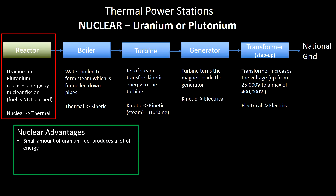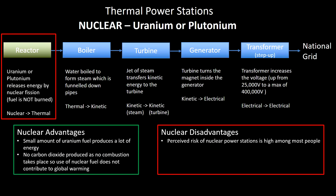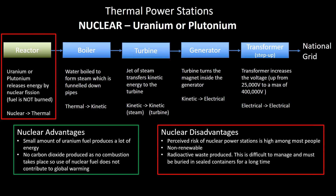Advantages of nuclear: very high energy density in the fuel, so you need hardly any fuel to produce a very large amount of energy. No carbon dioxide is produced because we're not burning anything. Disadvantages: perceived risk is very high, though modern nuclear power stations are very safe. It's non-renewable because uranium or plutonium is limited in supply. The big one is radioactive waste — difficult to manage, needs to be buried in sealed containers for extremely long periods, and gives off ionising radiation which can increase cancer risk. This power station is also very slow to start up and shut down, making it a good baseload station rather than one for responding to sudden changes in demand.